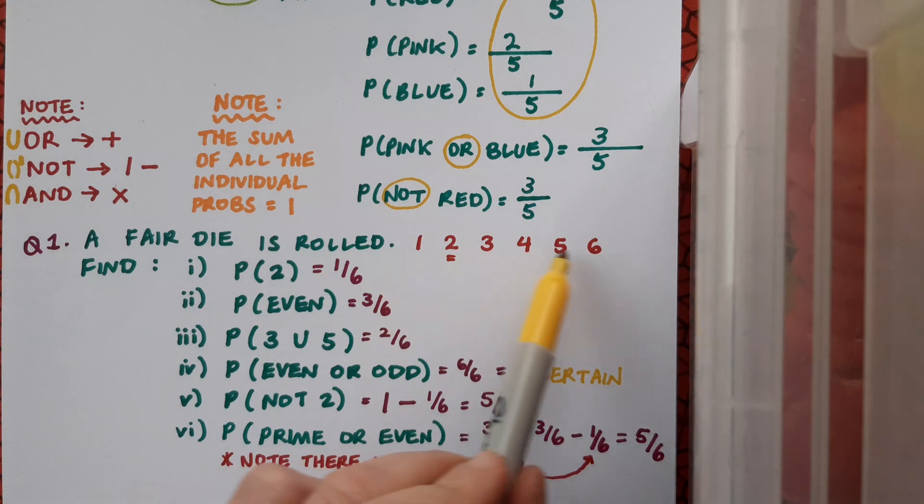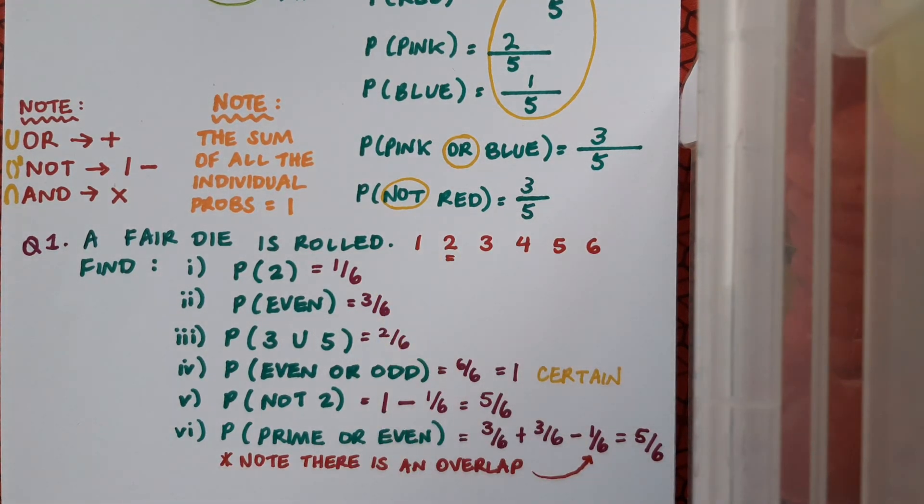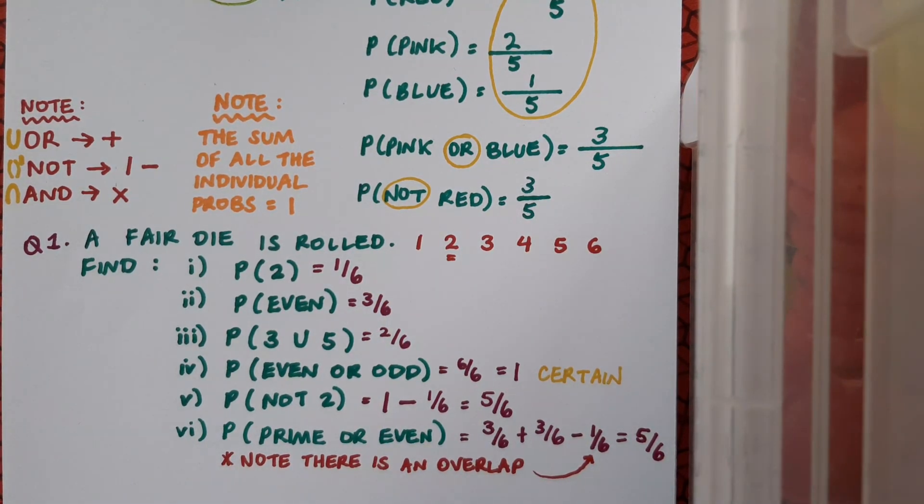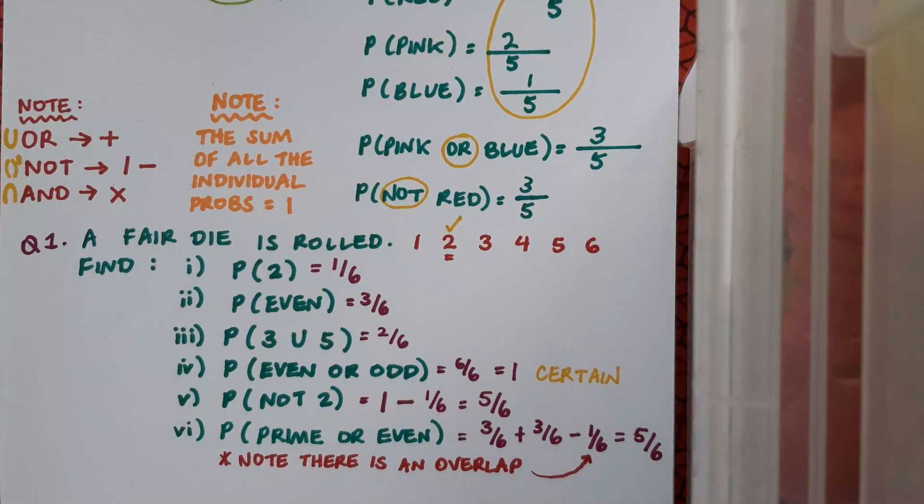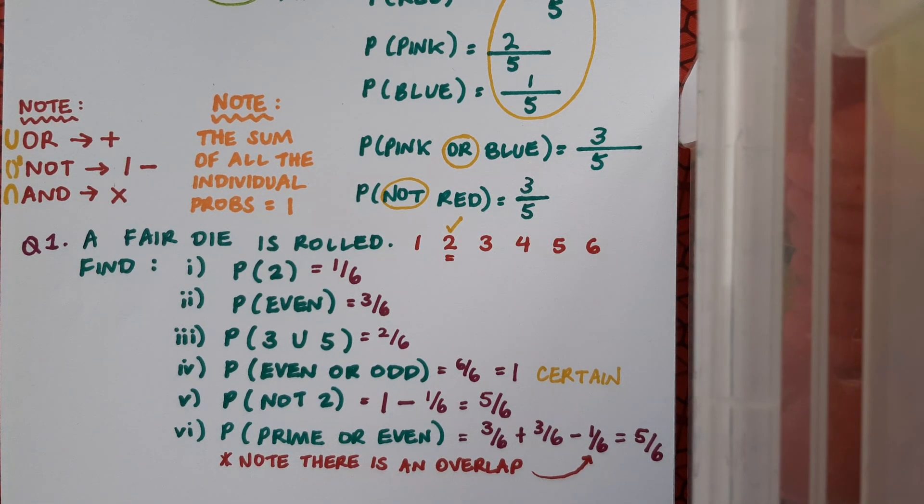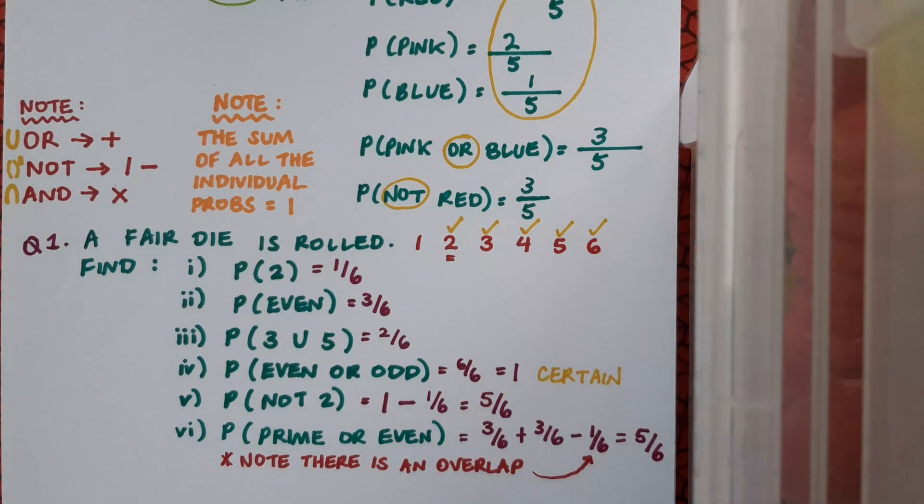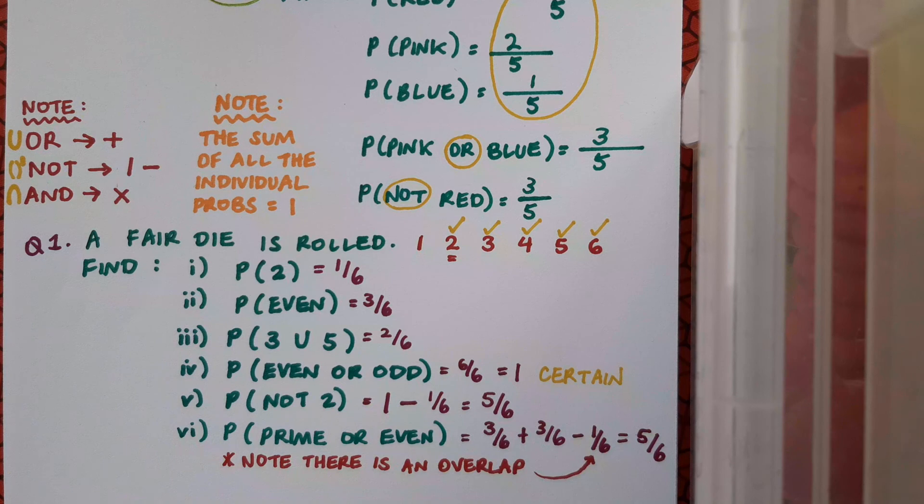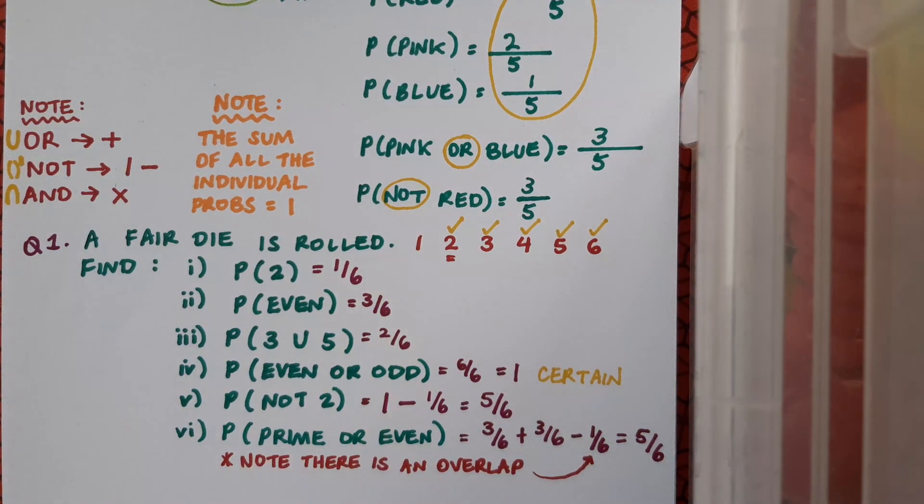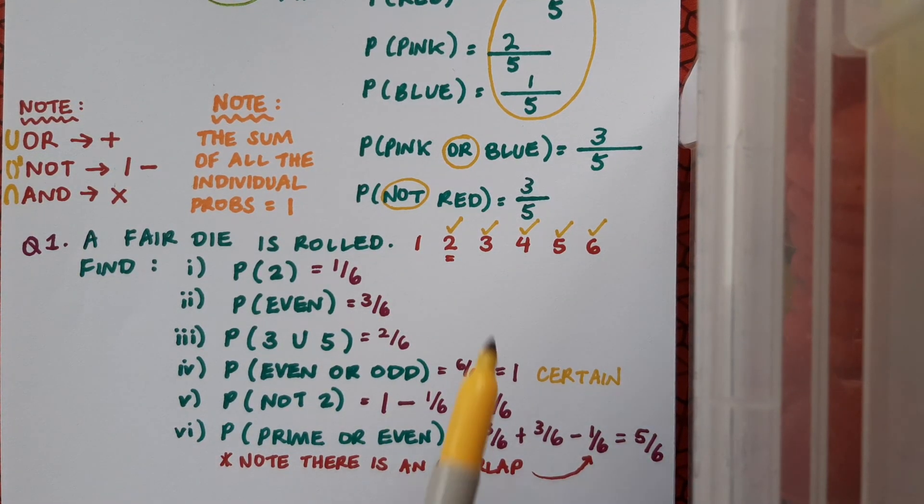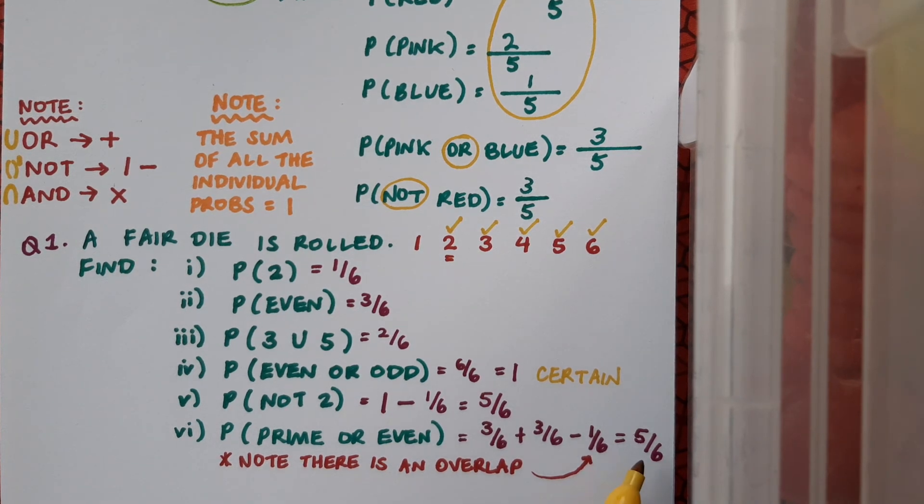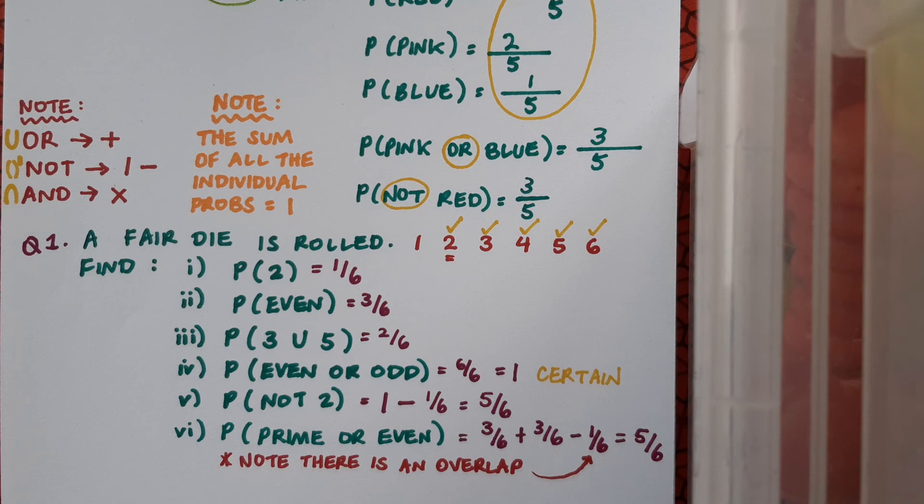I can verify this from my list of the sides of the dice up here by just ticking off the favorable outcomes. So two fits the description—it's prime or even, well it's actually both. Three is prime, four is even, five is prime, six is even. One doesn't fit the description for either of these so I haven't ticked it. So I've ticked five of the numbers, so there are five favorable outcomes and there are six outcomes in total. This agrees with my final result here: five over six.